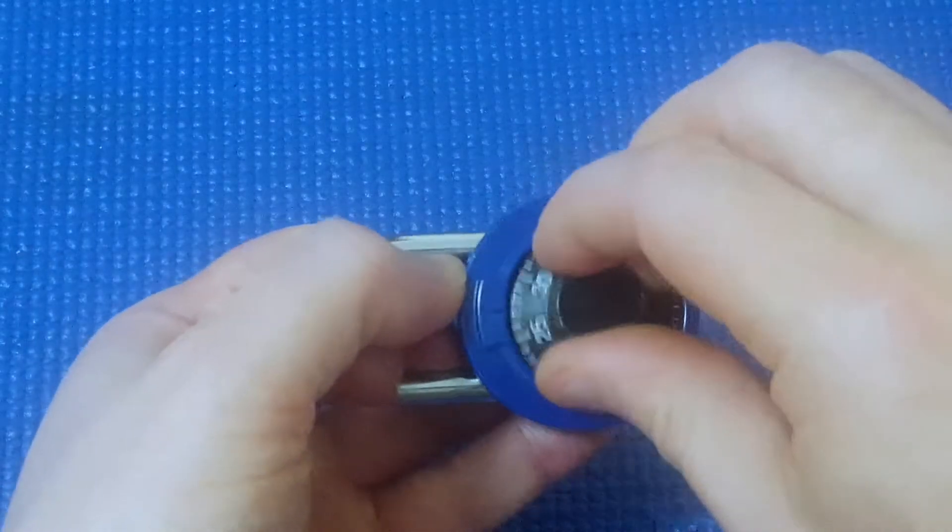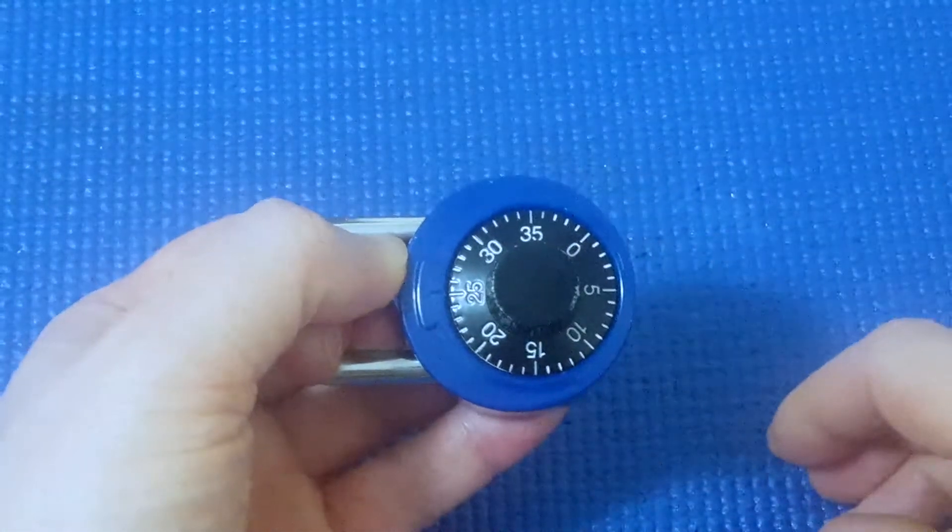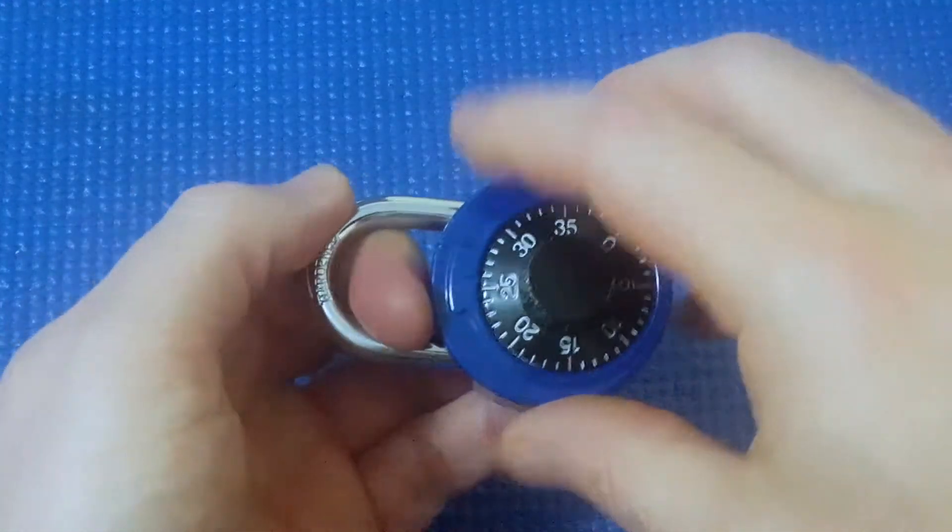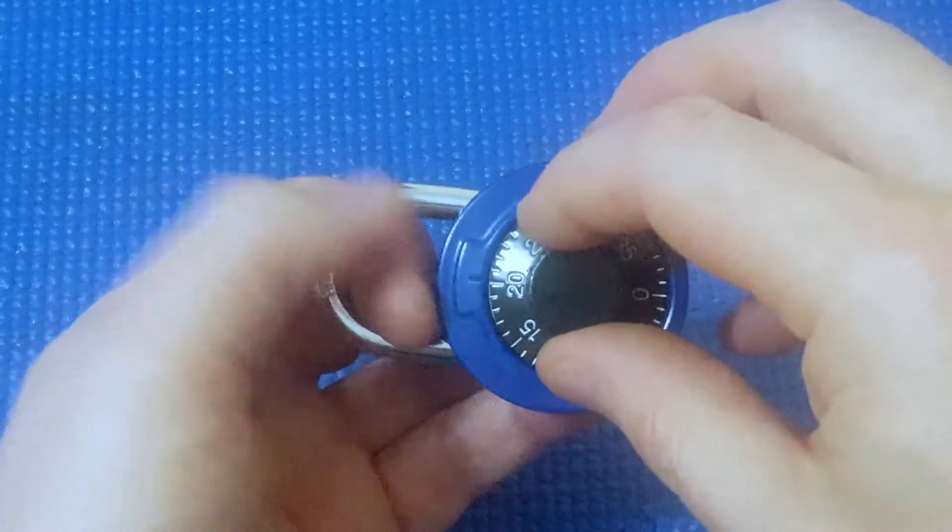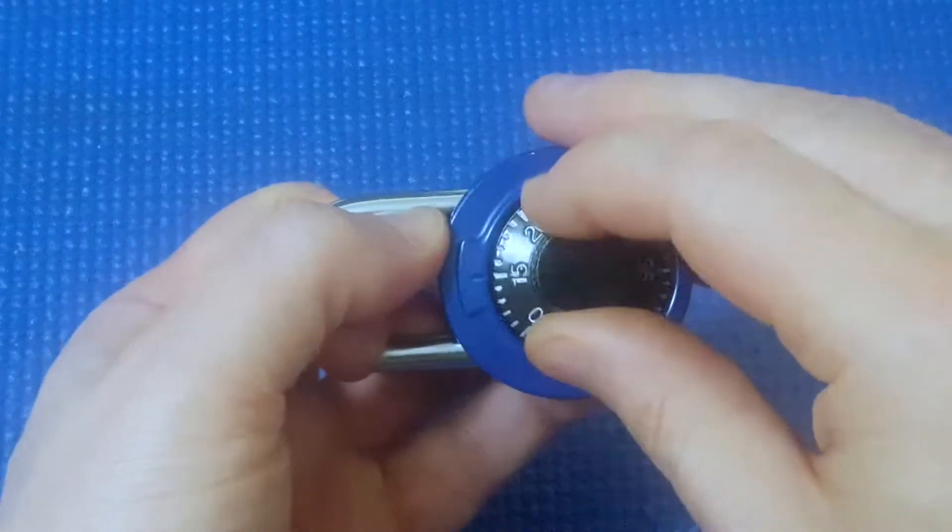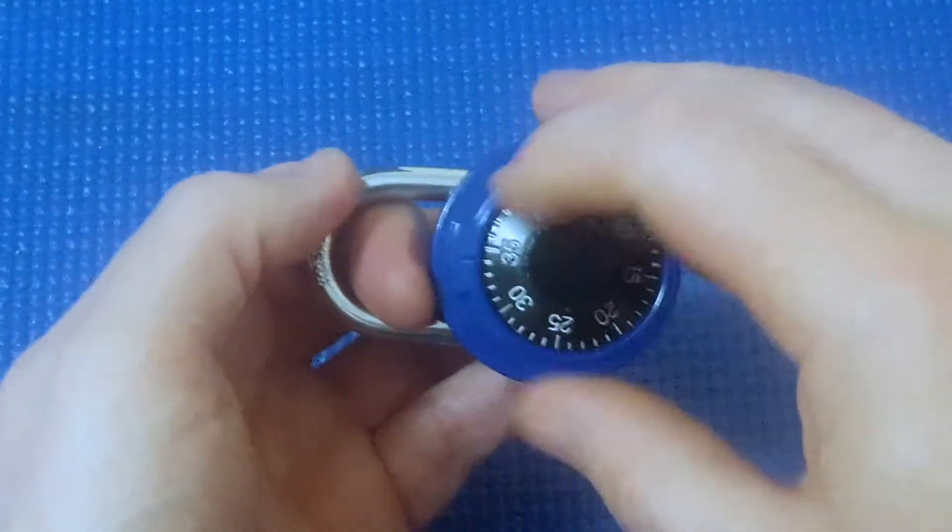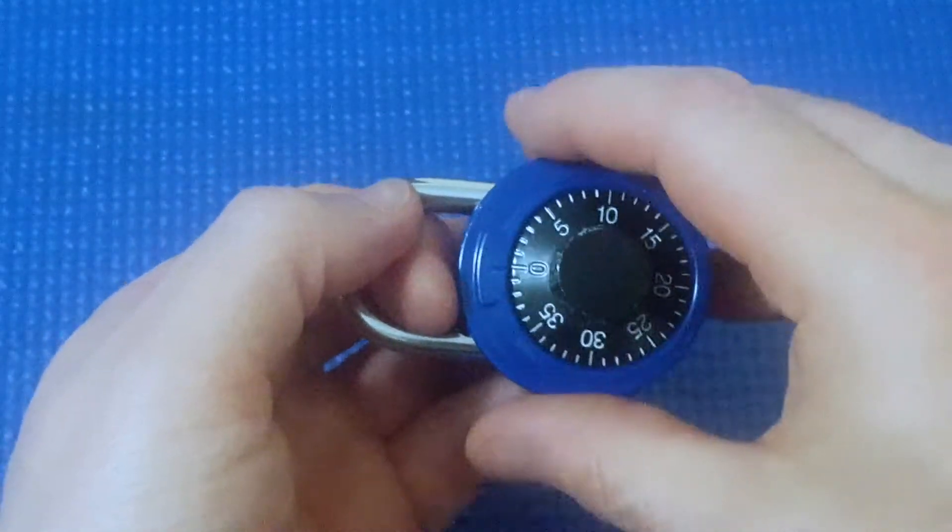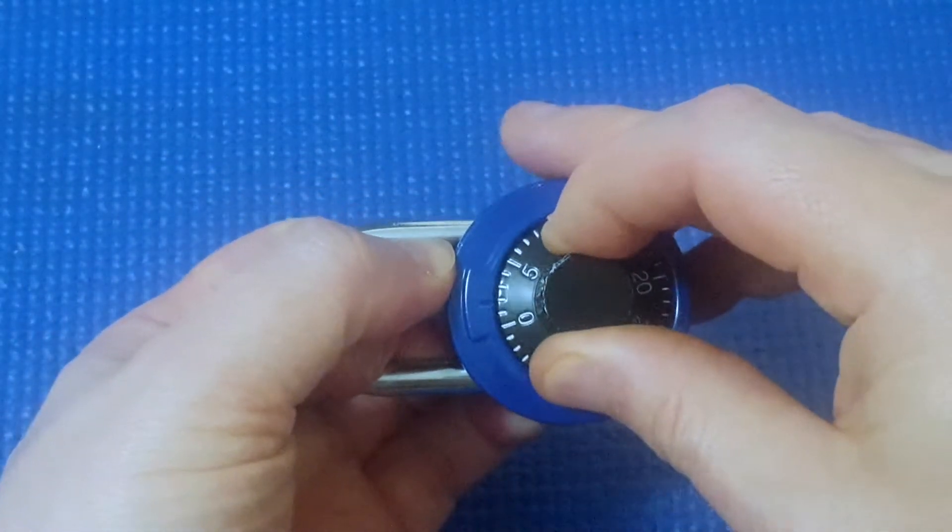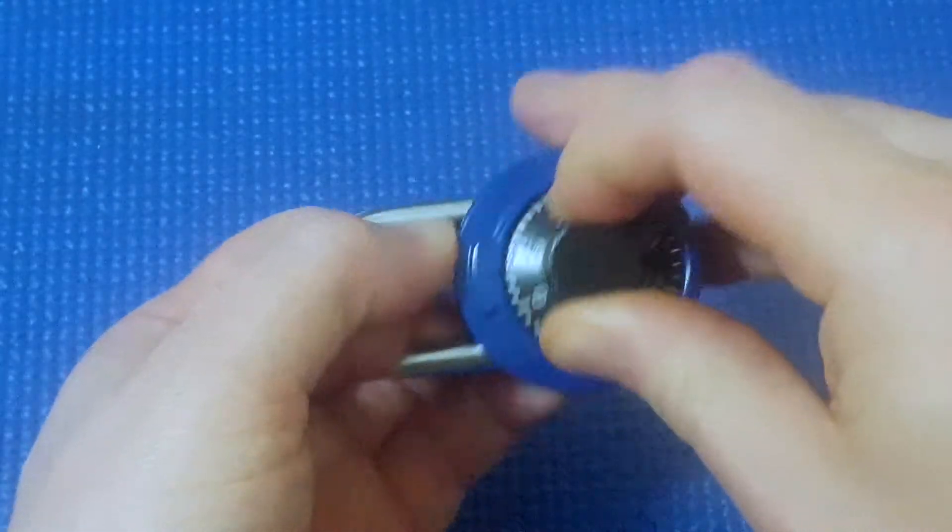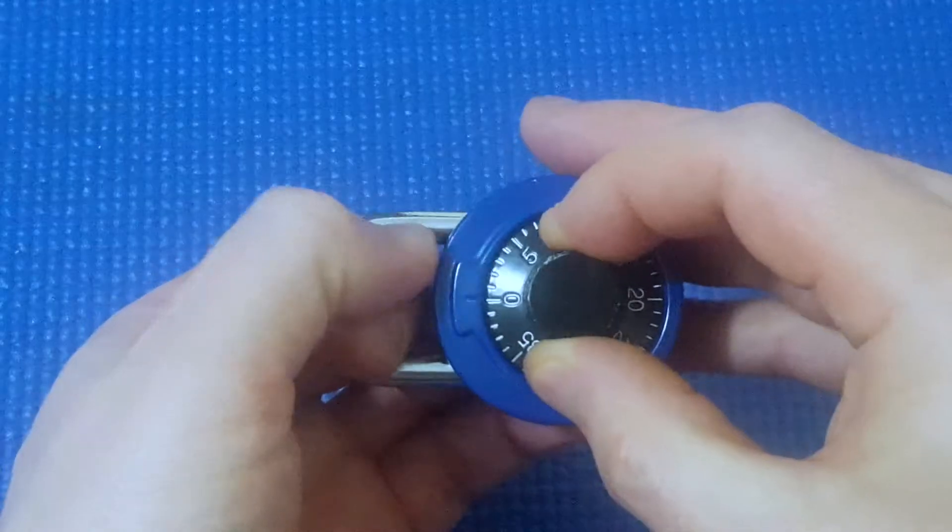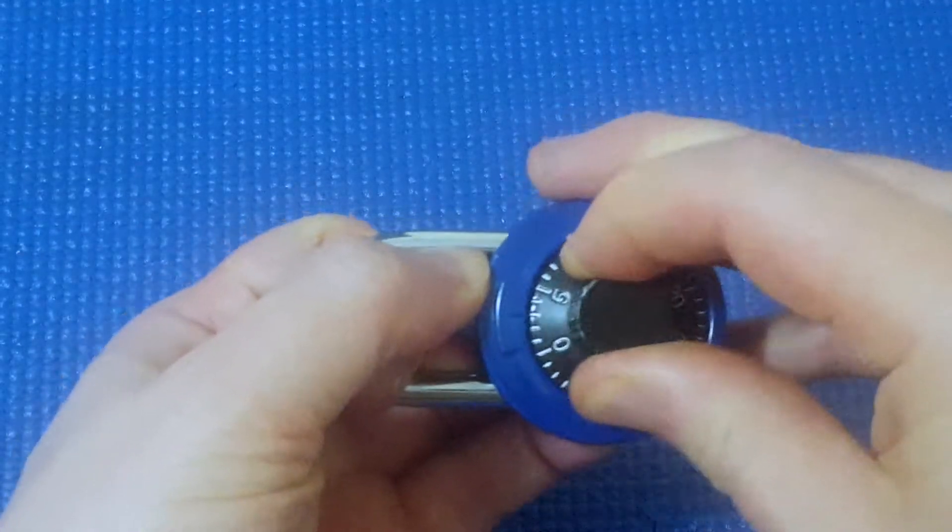This is one of the ones that clicks into every number, so it's more similar to a Master Lock than one of those cheap ones because it clicks into every number, not every two or three numbers. So what I like to do is start at zero and turn it several times to the right, then start at zero.